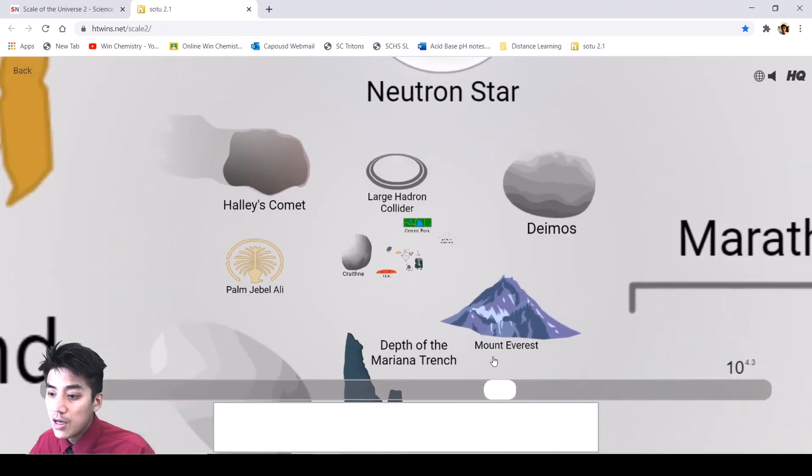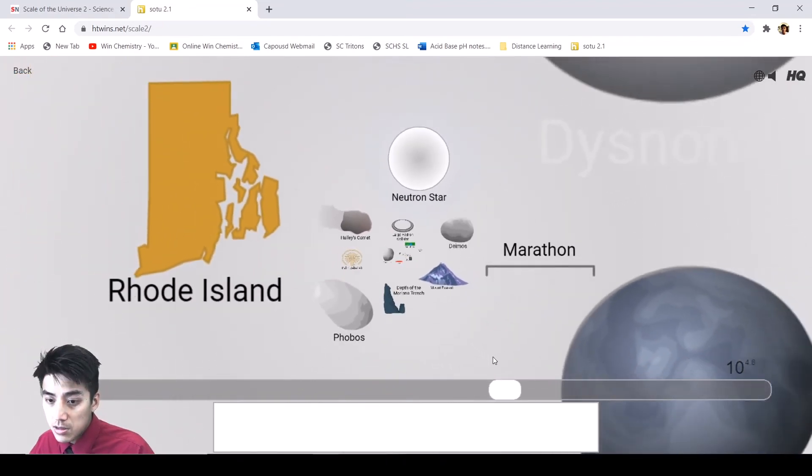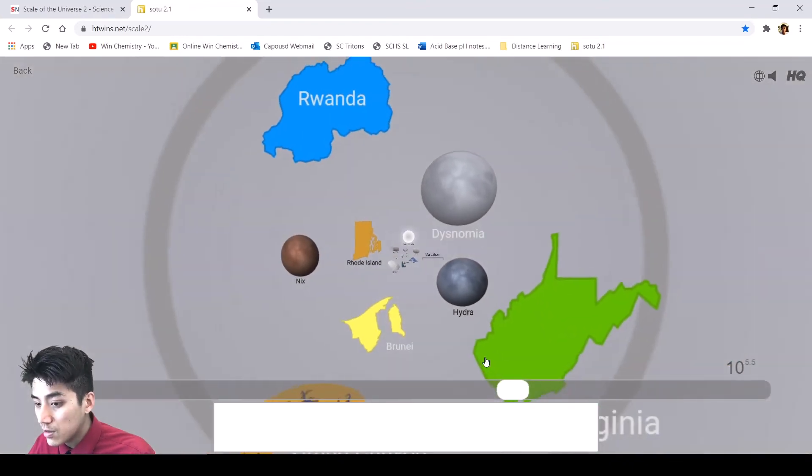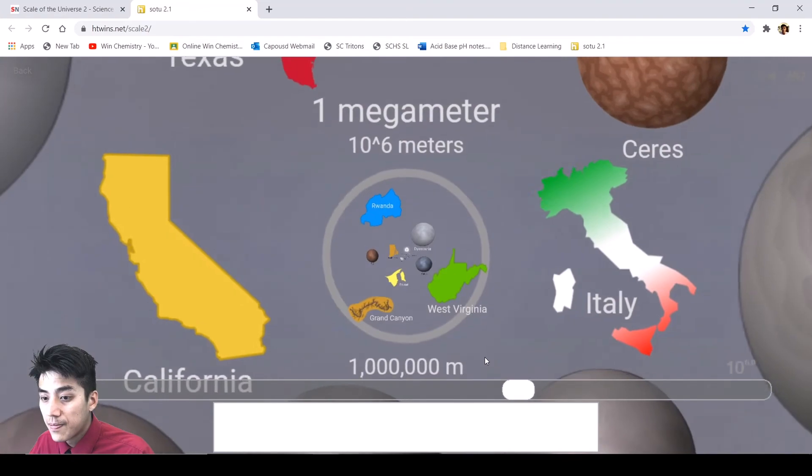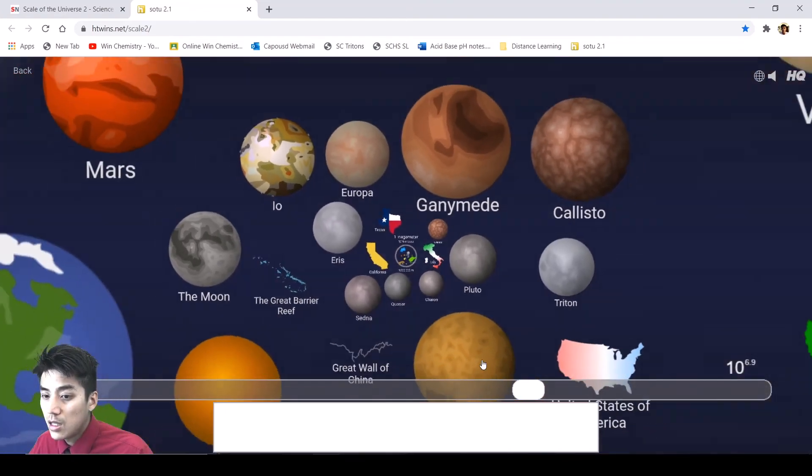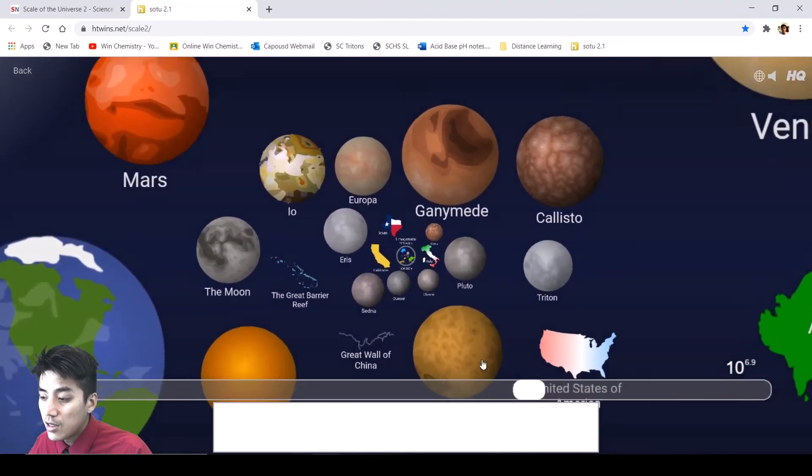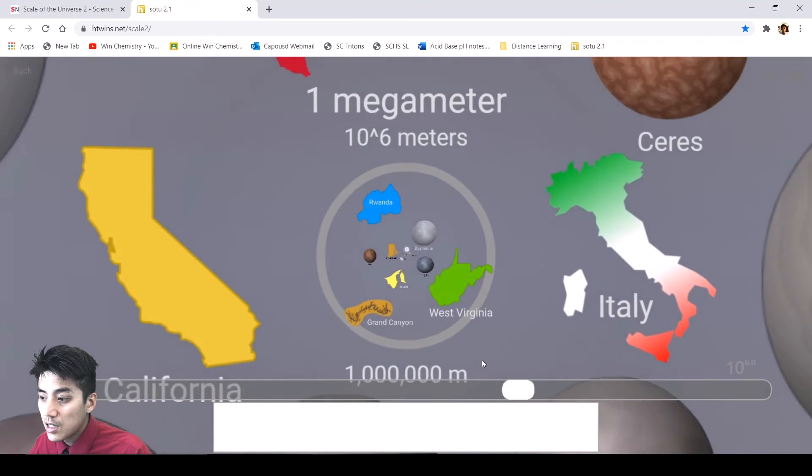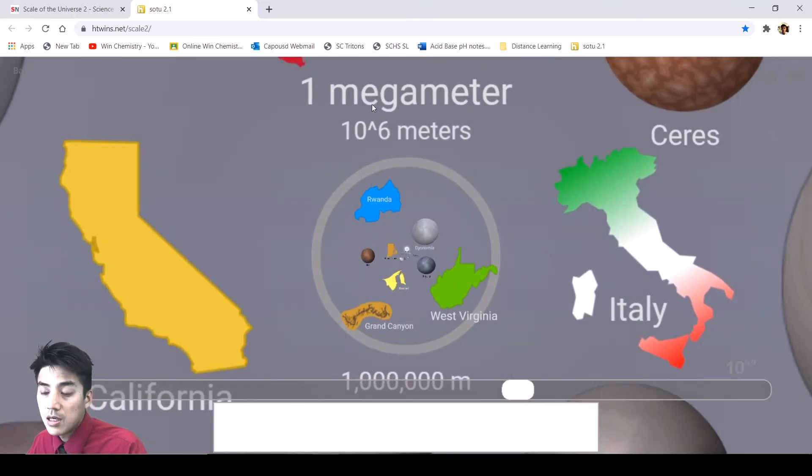And so now as I continue to zoom out, we're now talking about the sizes of small states. So there's California, small countries, small moons, and even small planets. Now, I may have skipped over one. Let's go back. 10 to the sixth is mega. So a mega is 1,000,000. That's what it means. These are things 1,000,000 times bigger than you. So it's going back to the theme of the power of 10.